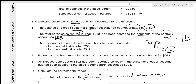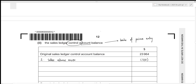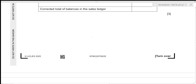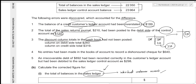The third error: the discount column totals in the cash book had not been posted. The cash book is a book of prime entry, so this affects the control account. The discount relevant to the sales ledger control account is discount allowed. Discount allowed is an expense and reduces trade receivables. The debit column of the cash book shows 283 for discount allowed — the 319 figure relates to discount received, which is irrelevant here. Since discount allowed reduces trade receivables, we subtract 283 from the control account.